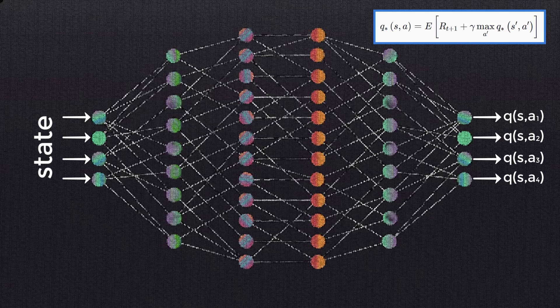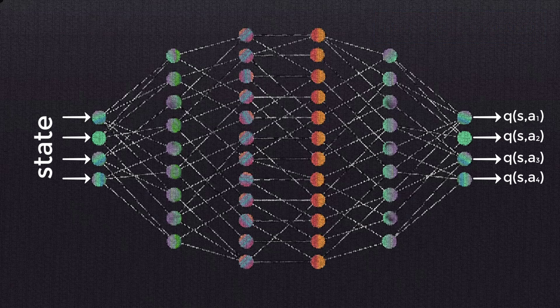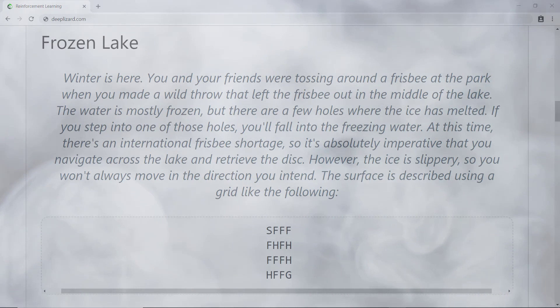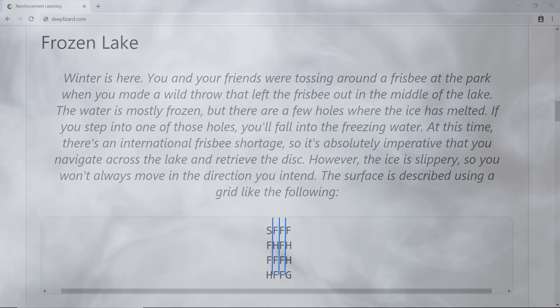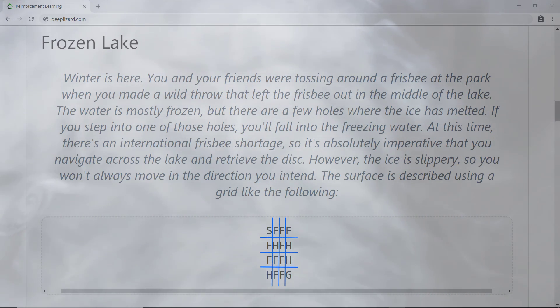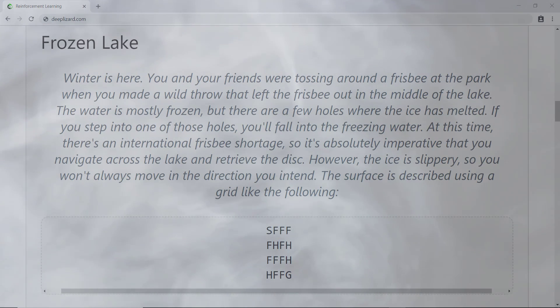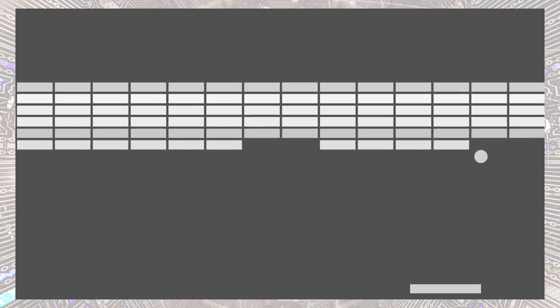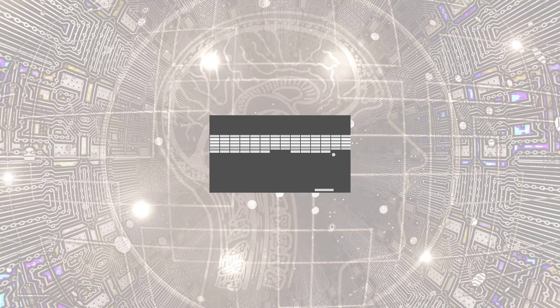Now let's get into more details about the network itself. We discussed that the network accepts states from the environment as input. For something like Frozen Lake, we could represent states using a simple coordinate system. If we're in a more complex environment like a video game, we'll use images as input — specifically still frames that capture states from the environment. Standard preprocessing involves converting RGB data into grayscale, since color usually doesn't affect the state of the environment. Additionally, we'll typically see some cropping and scaling to cut out unimportant information and shrink the image size.